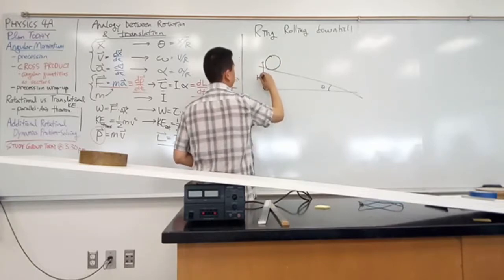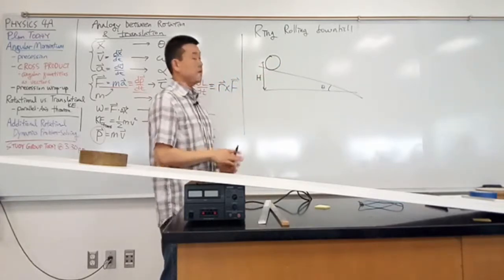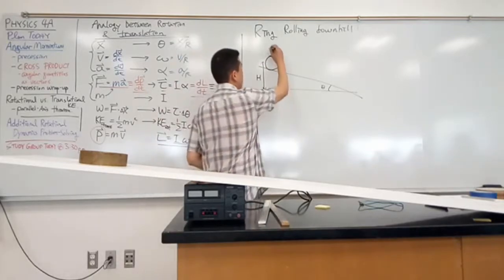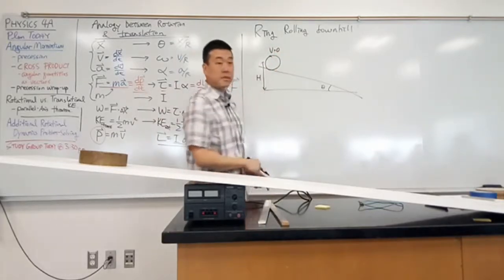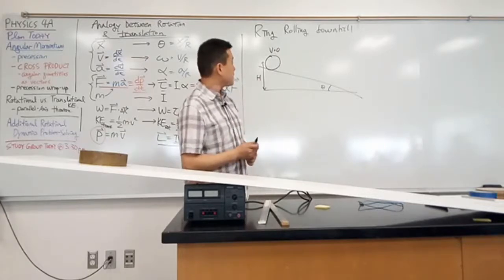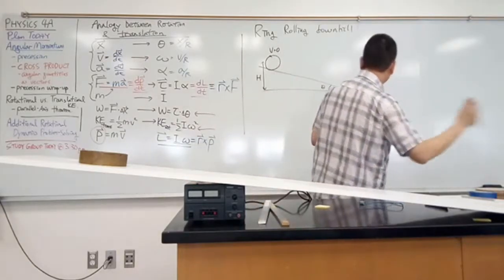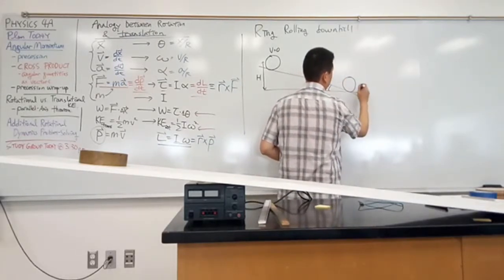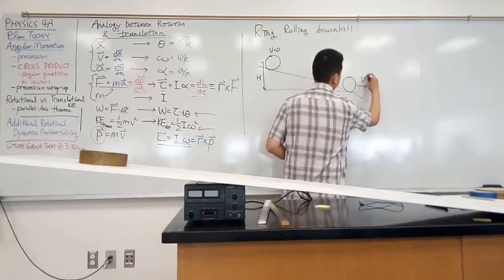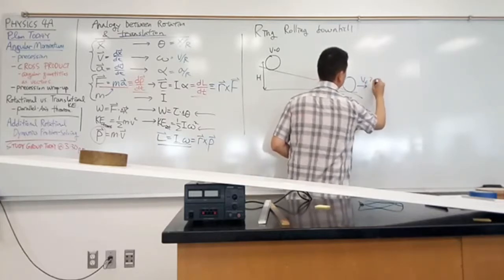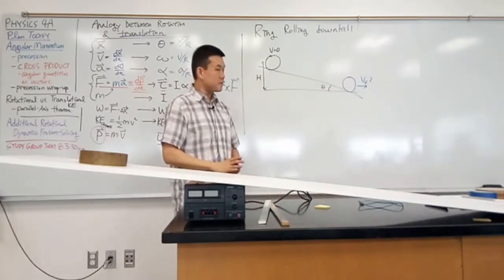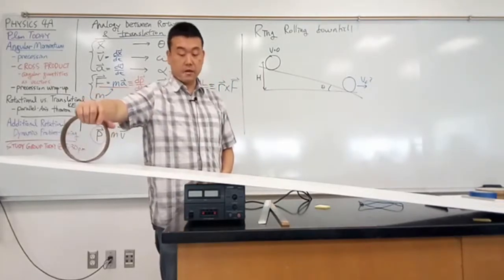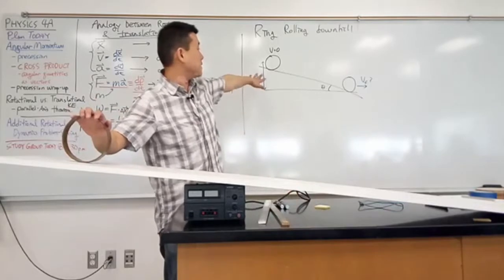I have a ring that starts out at some height h, starts with zero velocity. The standard question I could ask is: when the ring reaches the bottom, what is the final velocity of the ring? Does that sound like a reasonable question? And having seen this setup, does it look like I have completely specified the setup?